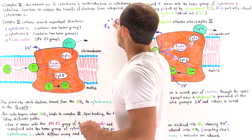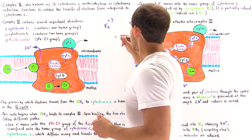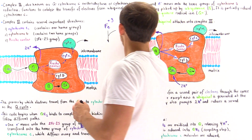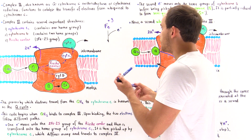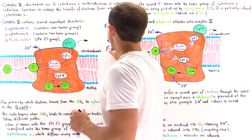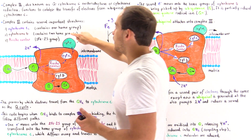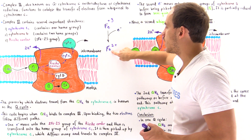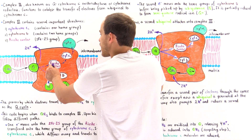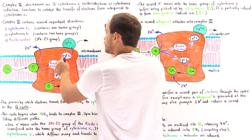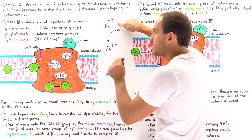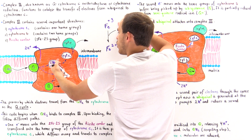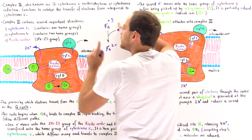Inside the heme group, the iron atom in the oxidized version of cytochrome C1 exists in the Fe³⁺ form. When it gains a single electron, it is reduced into the Fe²⁺ form. The electron travels from the Rieske center to cytochrome C1, attaching onto the iron atom of the heme group, reducing it. The electron then travels from the heme group and ultimately ends up on the heme group of cytochrome C.